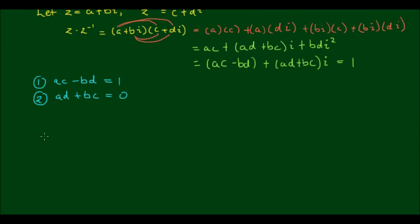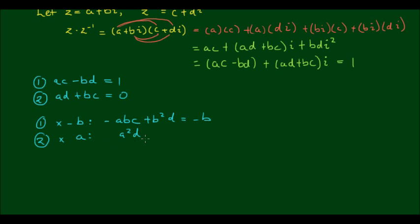The first thing I can do is to multiply equation 1 by negative b. And this will result in minus abc plus b squared d is equal to negative b. And then if I multiply equation 2 by a, I will get a squared d plus abc is equal to 0. And then if I add these two together, I can eliminate the abc terms because negative abc plus abc is equal to 0.